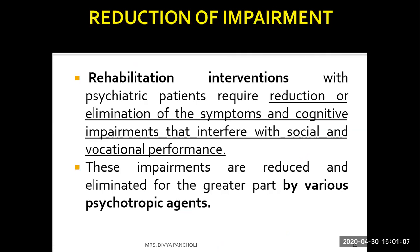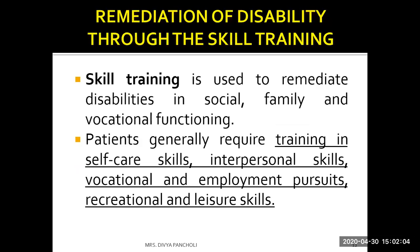Rehabilitation with psychiatric patients requires reduction or elimination of symptoms and cognitive impairments that interfere with social and vocational performance. These impairments are reduced for the greater part by various psychotropic agents. Psychopharmacology and psychotropic medication — including for positive and negative symptoms such as in schizophrenia — is the most important aspect of the first step: reduction of impairment.